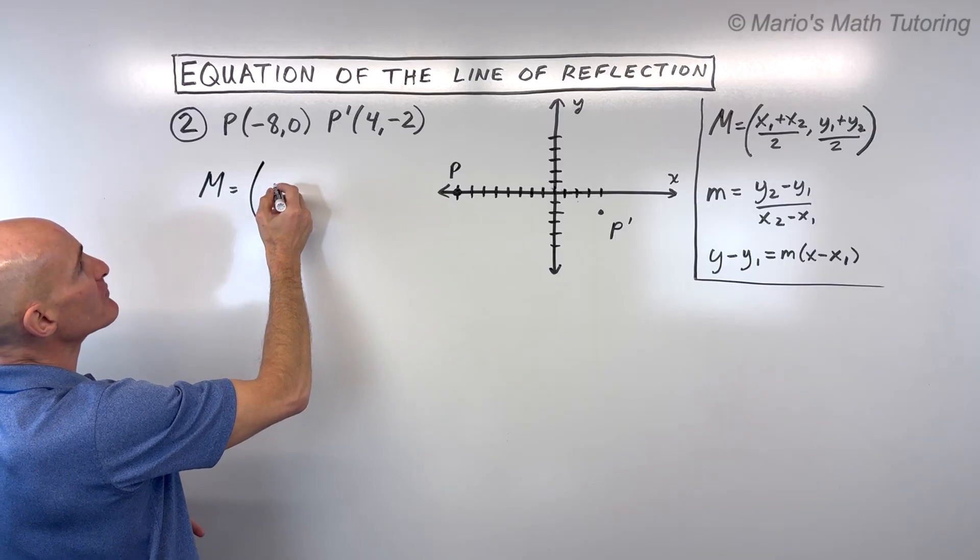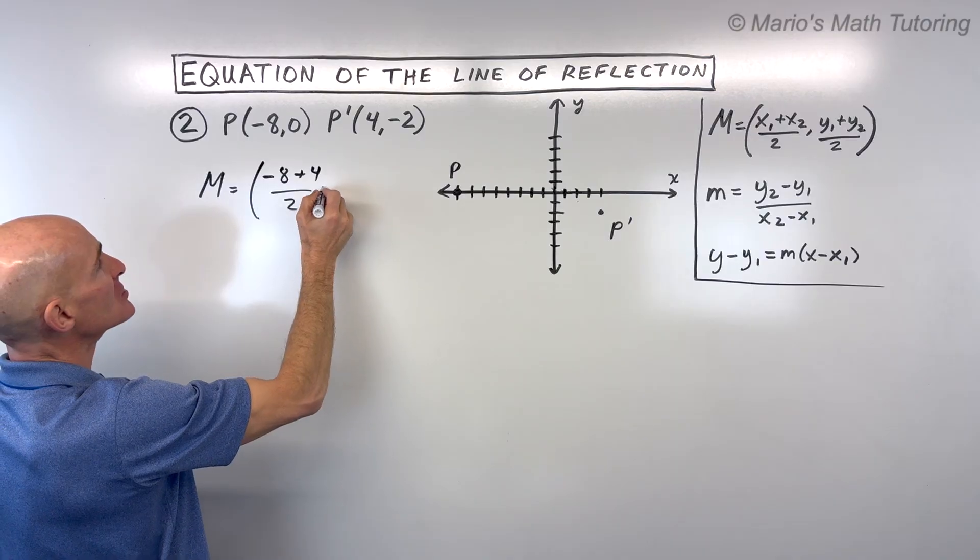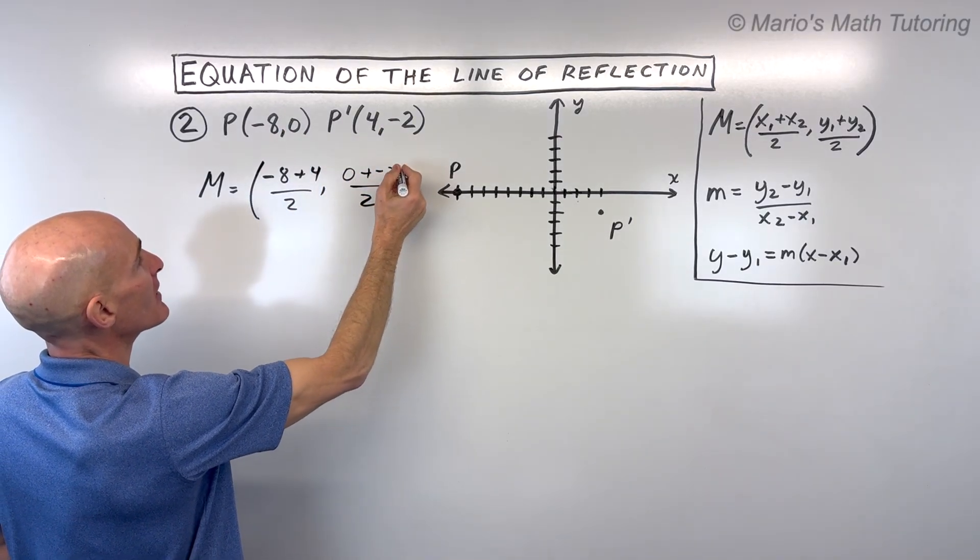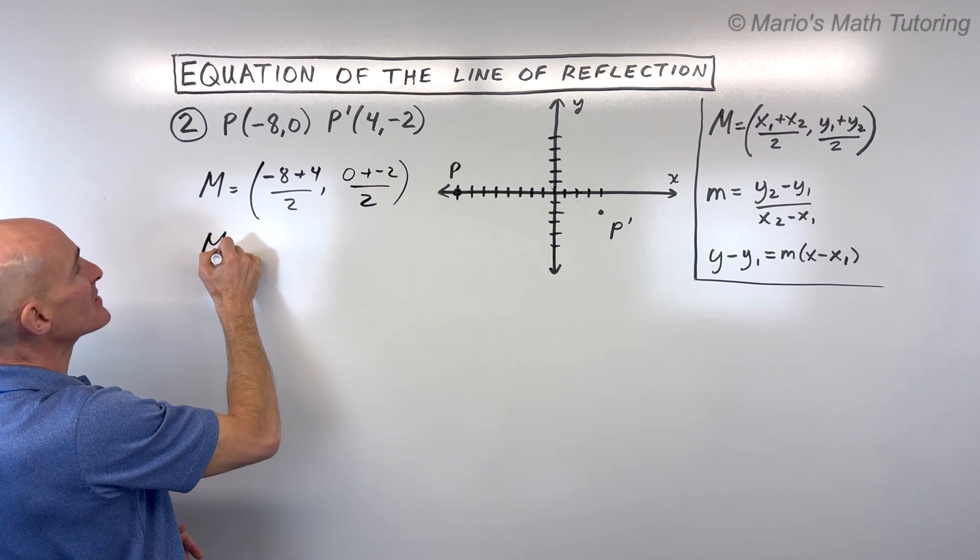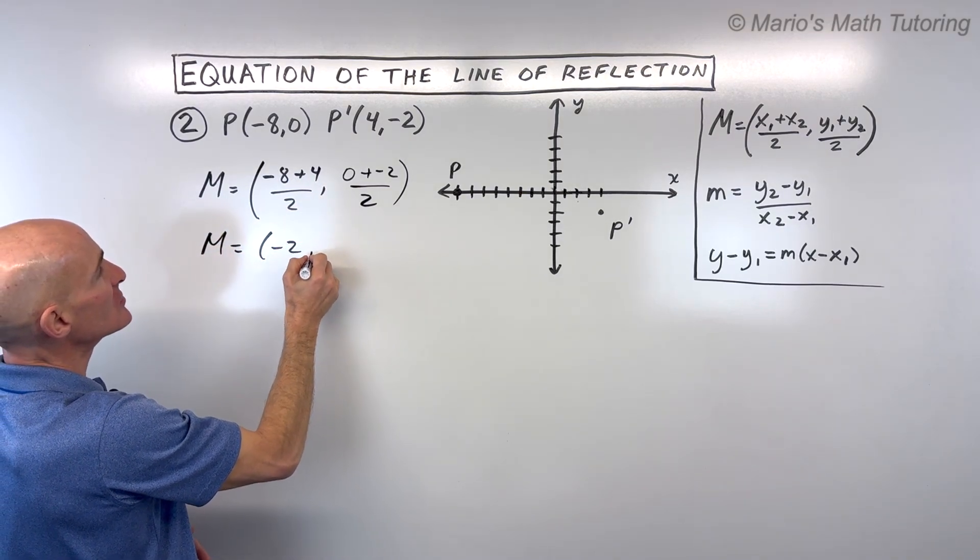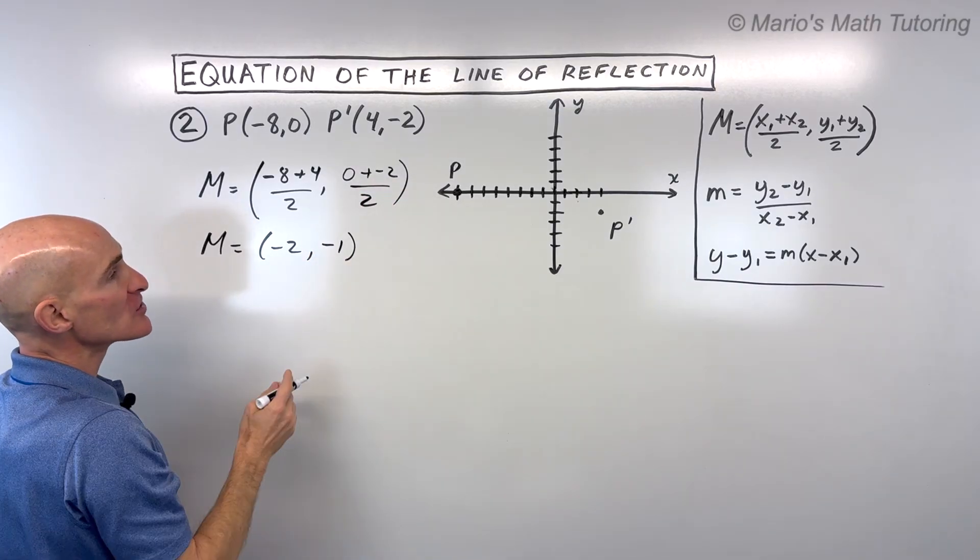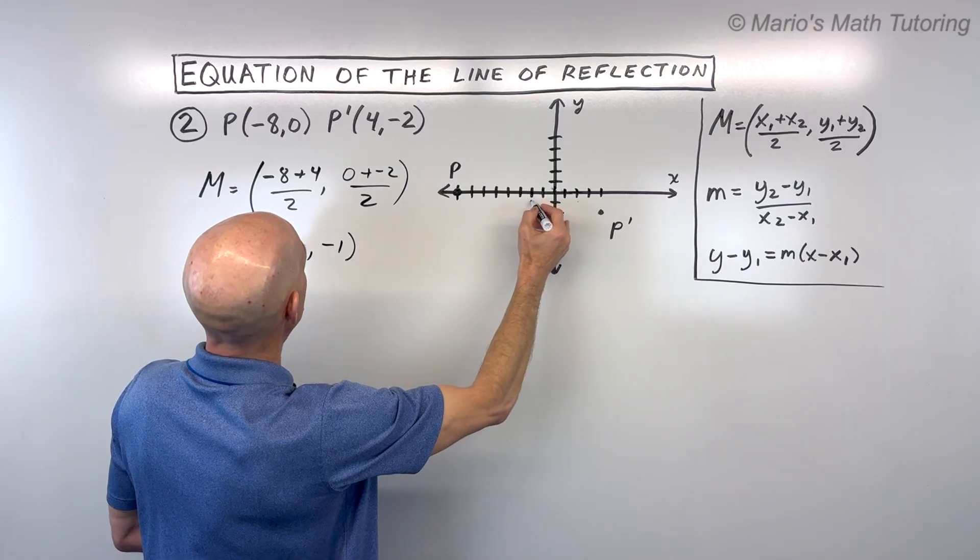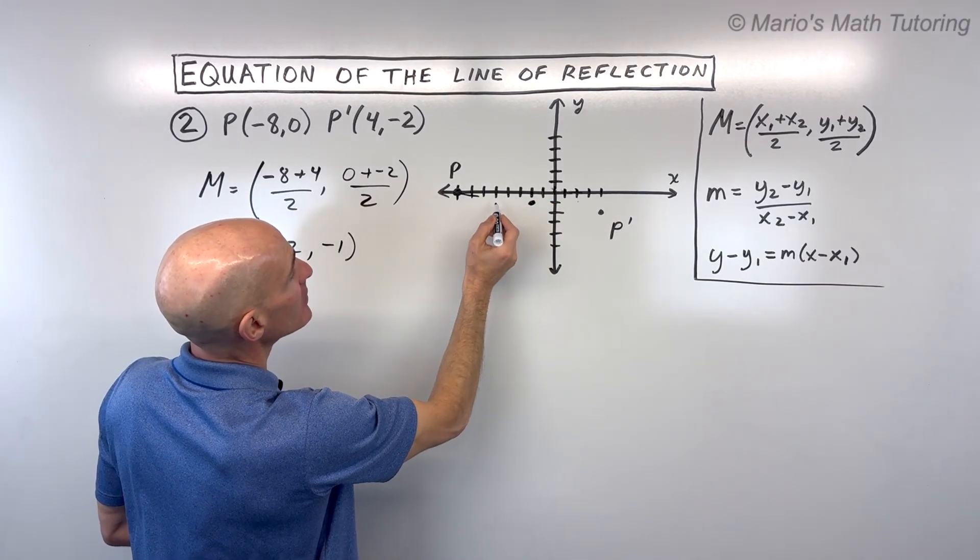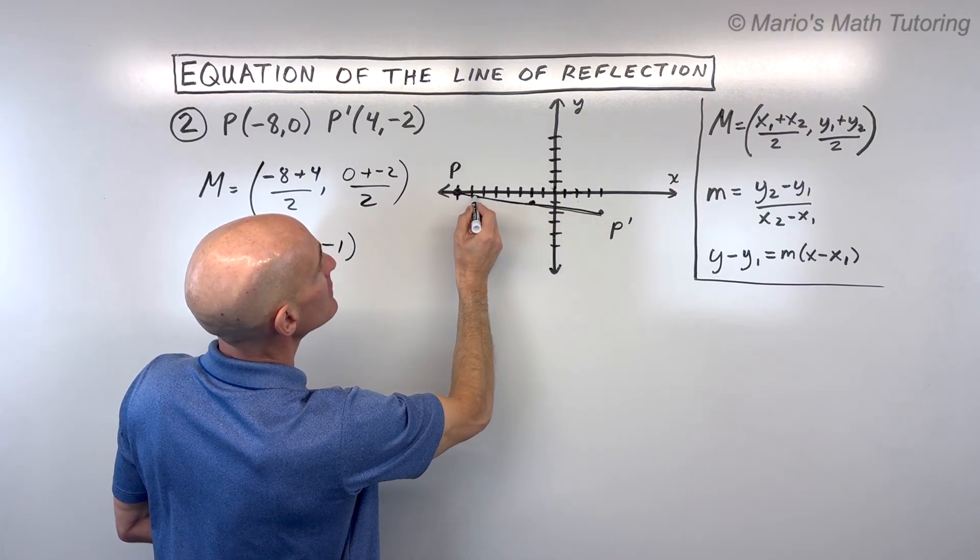But the midpoint, we can see we're adding the X's, negative 8 plus 4 divided by 2. Same thing with the Y's, 0 plus negative 2 divided by 2. So that's giving us a midpoint of negative 4 divided by 2, which is negative 2. And this is 0 plus negative 2 is negative 2 divided by 2 is negative 1. So that's our midpoint. I'll just sketch it here so we can help to visualize what's happening here. So it looks something like that roughly.